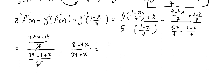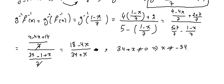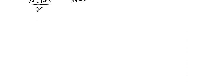After cancelling the common denominator of 7, we get g⁻¹(f⁻¹(x)) = (18 minus 4x) over (34 plus x). The condition is that 34 plus x ≠ 0, so x ≠ minus 34.